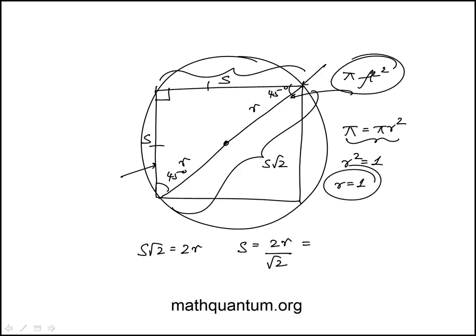So the side of the square is 2 times 1 over root 2, and it is the same as root 2, because 2 over root 2 is root 2.